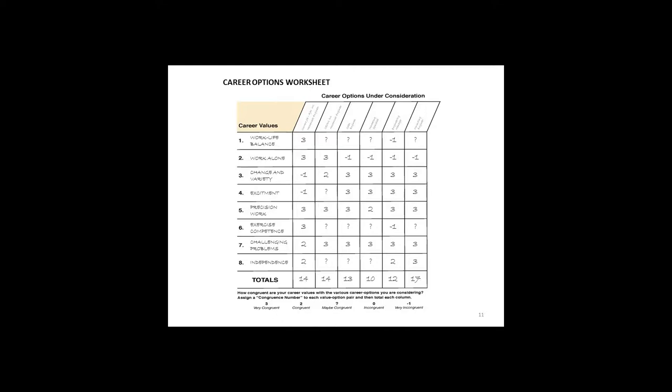Then I ask them to rate how those options fit with each of the values, giving it a scale from positive three, two, and one if it's congruent, and negatives from zero to negative three if it's incongruent, and a question mark if they're not sure. Here you can see on the PowerPoint a completed career options worksheet, where positive numbers show where the career value fits well with the career option, and negative numbers where it does not. But some of the most important things on that sheet are the question marks — that's where the client is not sure, which indicates they need to do some research.